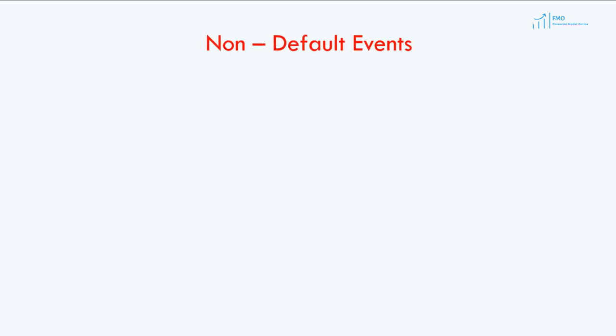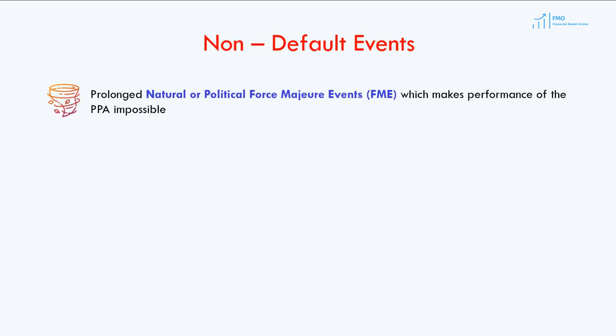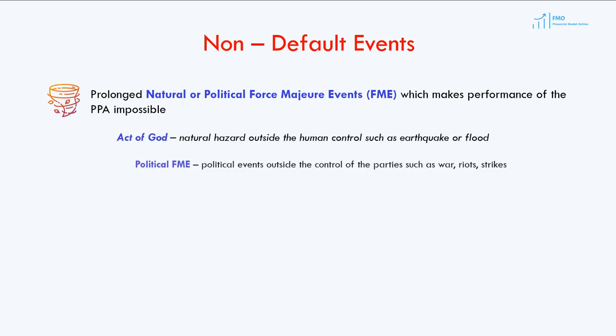There are certain events, such as a natural or political force majeure event, that can make PPA performance impossible. These are events like earthquake, flood, war, riots, or strikes.